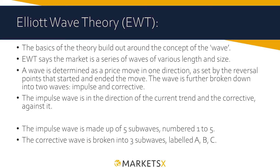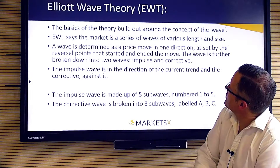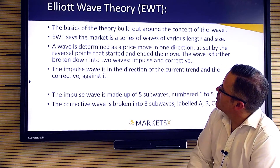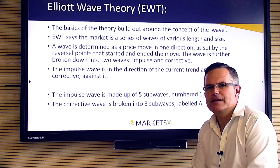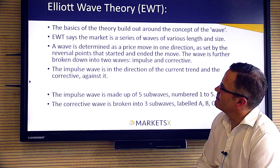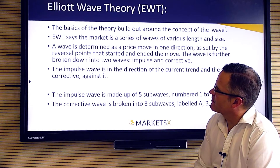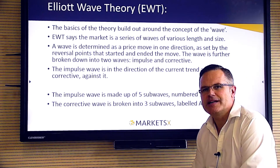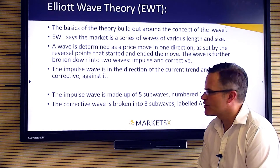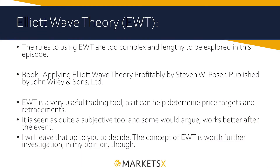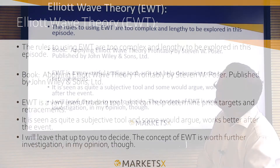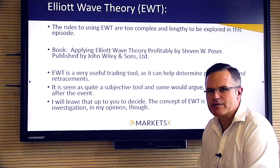The basic theory of Elliott Wave is built around the concept of a wave — it says the market is a series of waves of various length and size. These waves are determined as a price move in one direction, set by the reversal points that started and ended the move. The wave is further broken down into two types: the impulse wave and the corrective wave. The impulse wave is in the direction of the current trend and the corrective is against it. The impulse wave is made up of five sub-waves numbered one to five, and the corrective wave is broken down into three sub-waves: A, B and C. The rules, which are many and quite complex in Elliott Wave theory, do spell out how to use the theory.